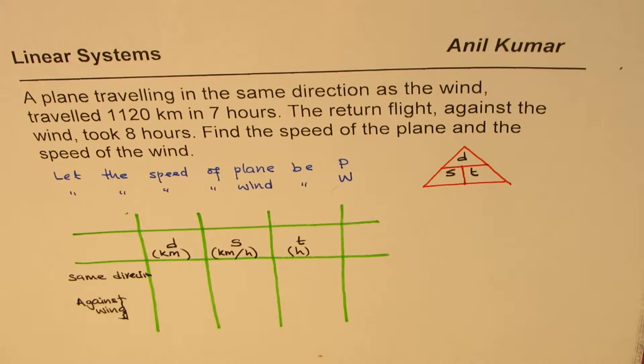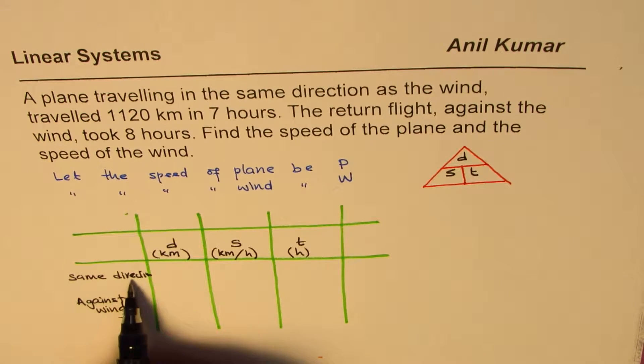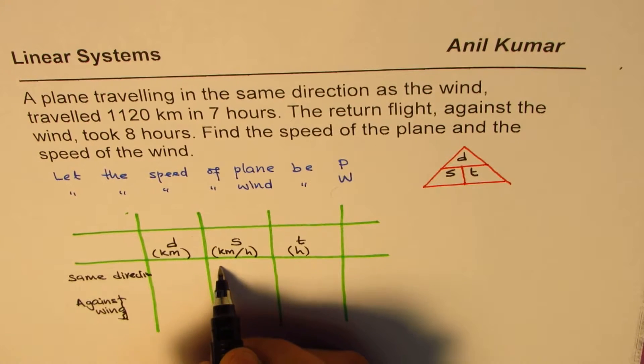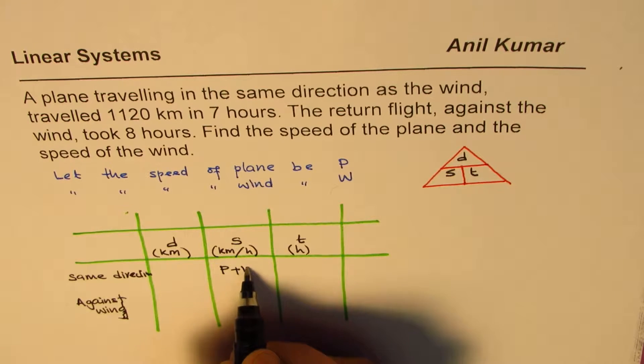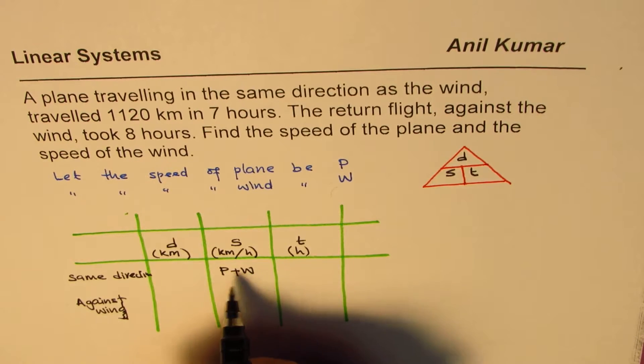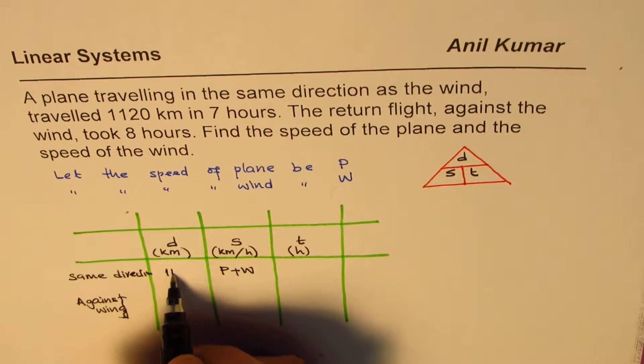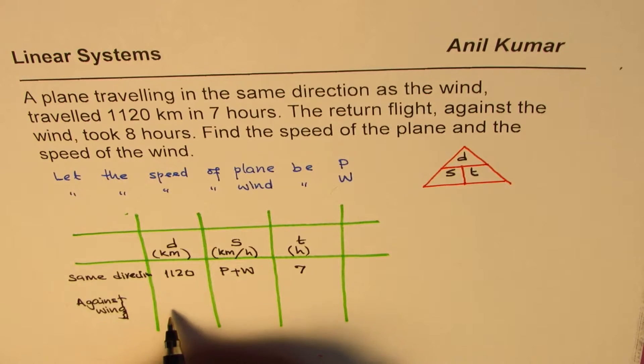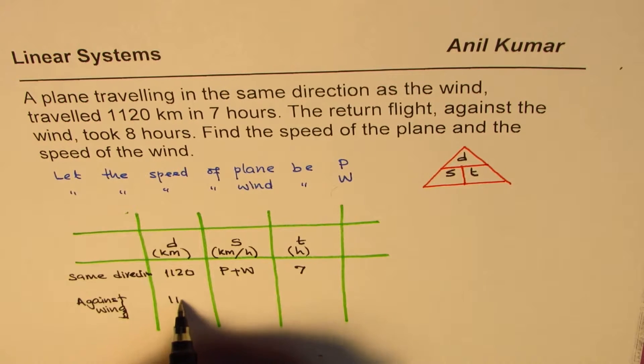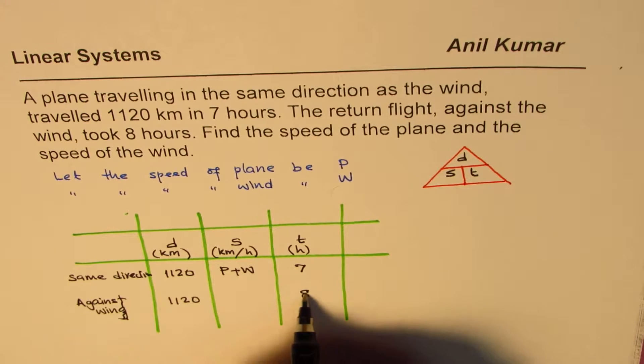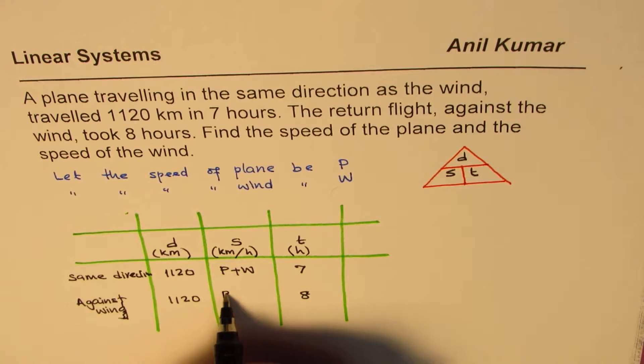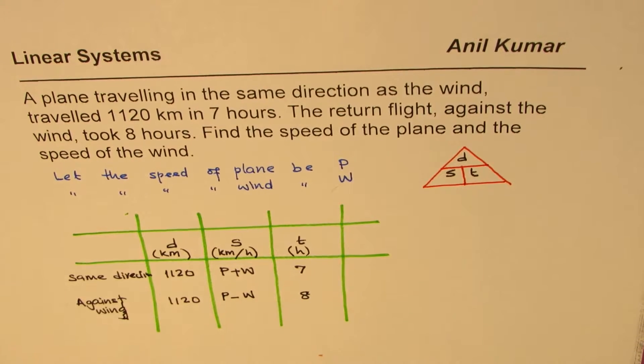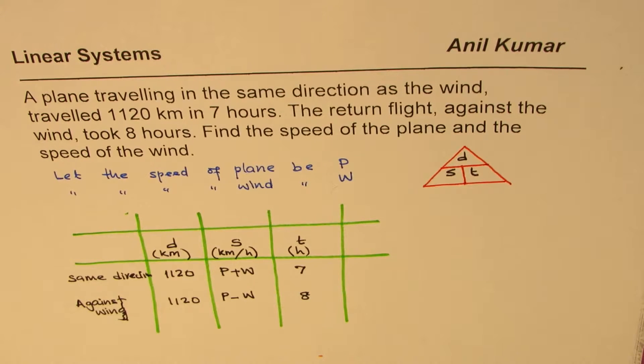Now if the plane is going in the same direction, its speed is higher. And we are saying the speed is P plus W, where P is the plane's speed, W is the wind. Distance being covered is 1120 kilometers and time taken is 7 hours. In the second case, same distance, 1120 kilometers is covered in 8 hours. However, the speed of the plane is lower. It has P minus W.